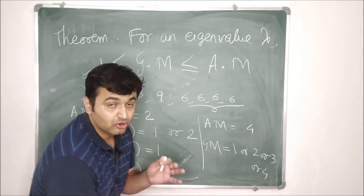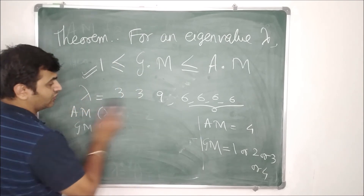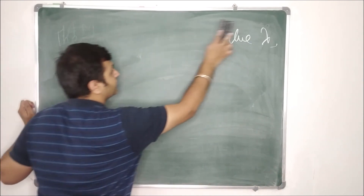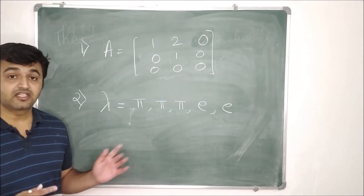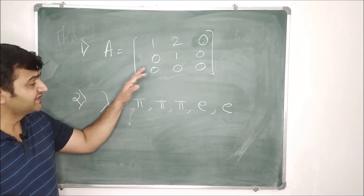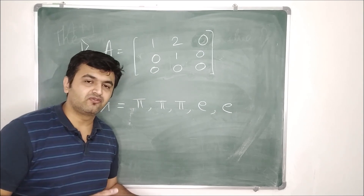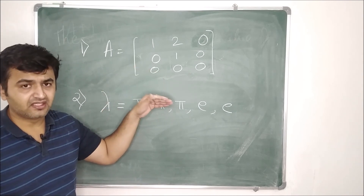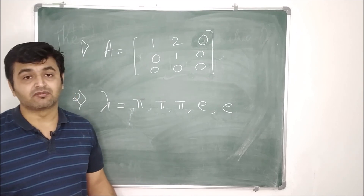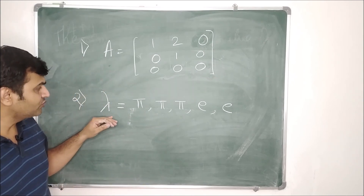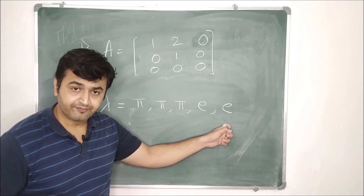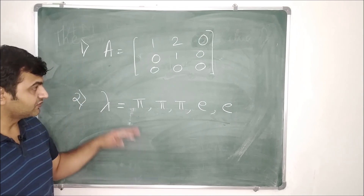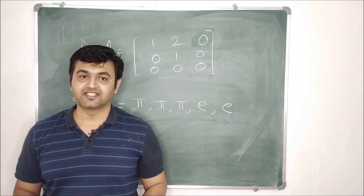I hope the concepts of algebraic and geometric multiplicity and eigenspace are clear. Let me give you two homework problems: find the eigenvalues, eigenvectors, geometric multiplicity, and algebraic multiplicity for the given matrix. Also, if you have a matrix whose eigenvalues are pi, pi, pi, tell me the algebraic multiplicity as well as the possibilities for geometric multiplicity. Please comment your answers in the comment section, and ask if you have any doubts.